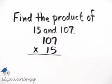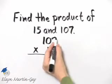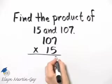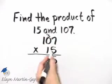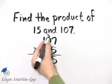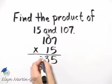If you wrote it as 15 times 107, that's perfectly okay. Let's multiply. 5 times 7 is 35. So I'll write down my 5, carry the 3. 5 times 0 is 0 plus 3 is 3. 5 times 1 is 5.